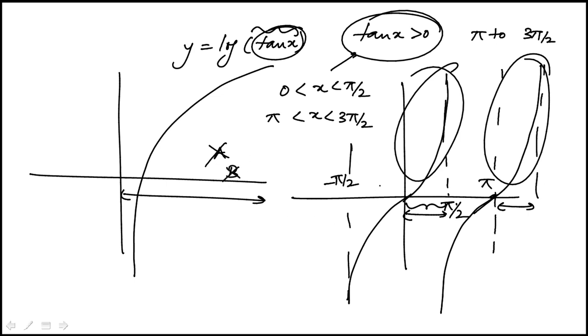C is also out because from minus pi over 2 to 0, it's negative. We're left between D and E.